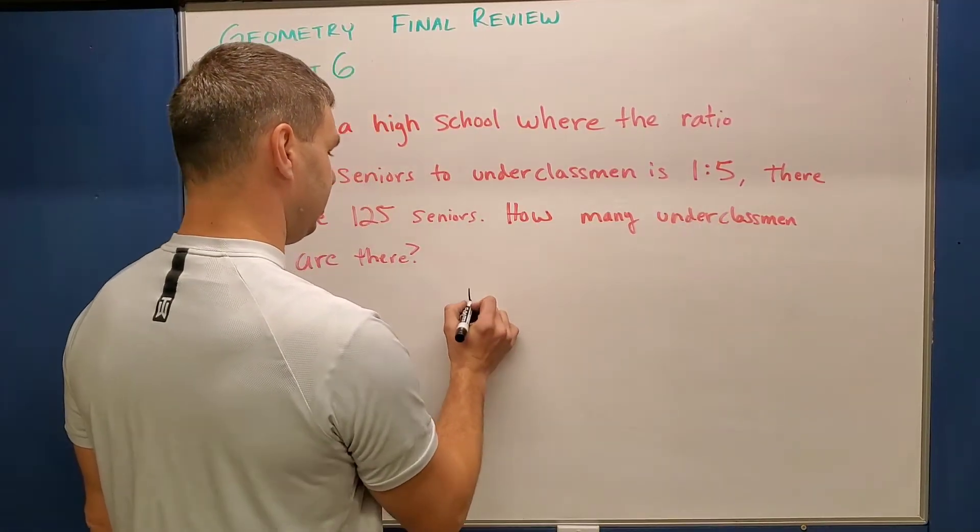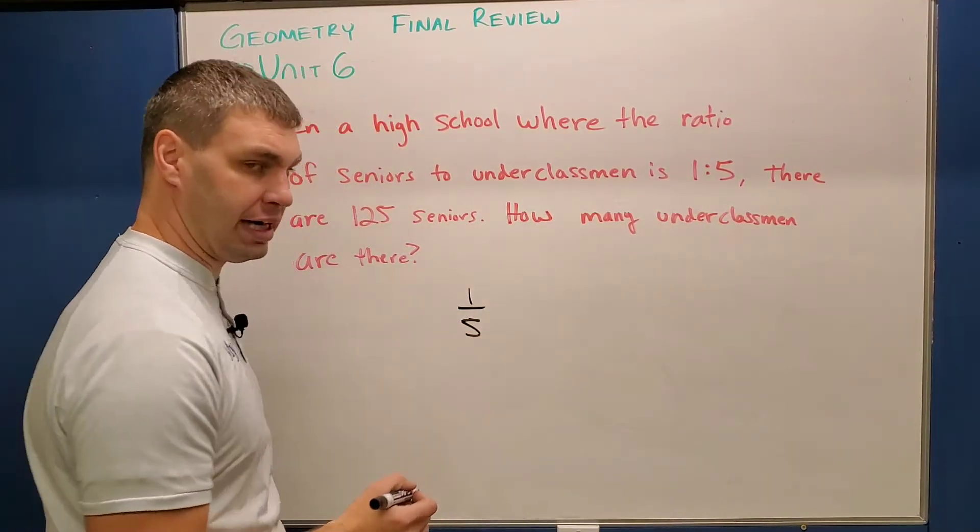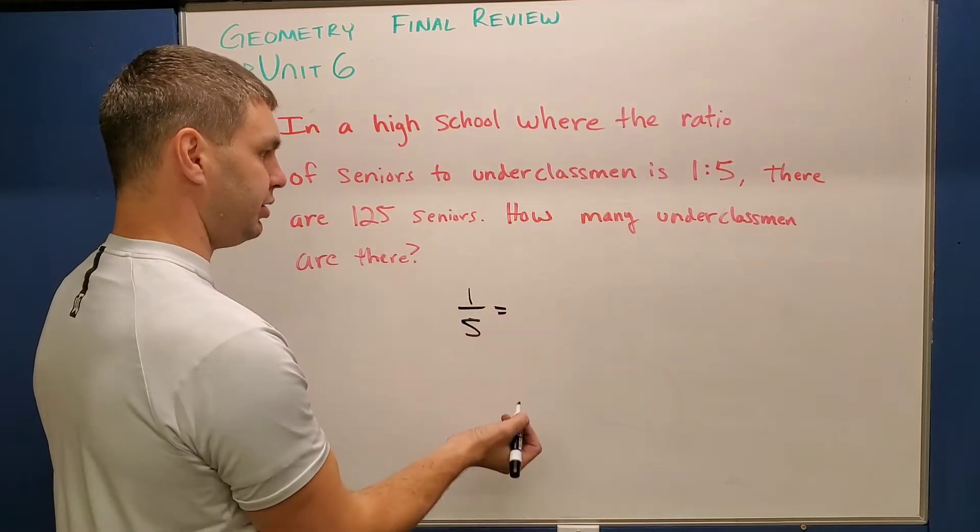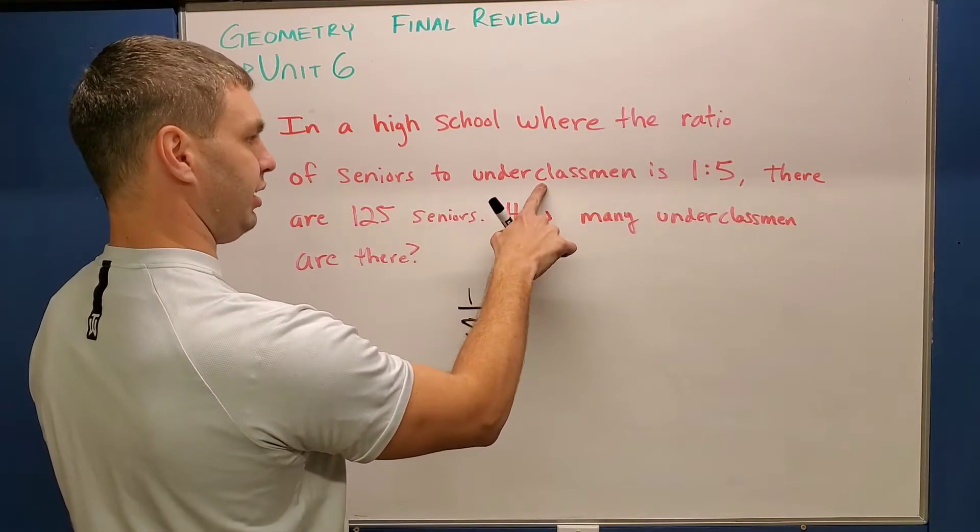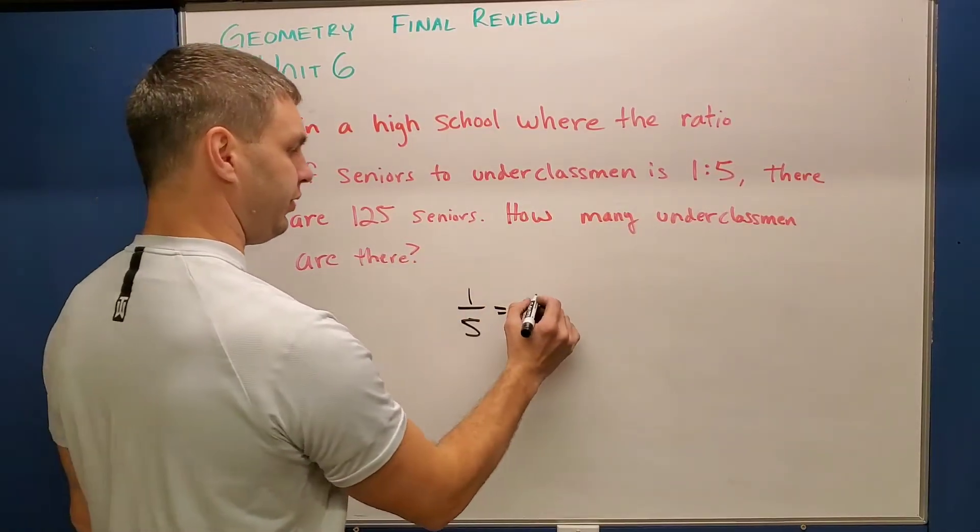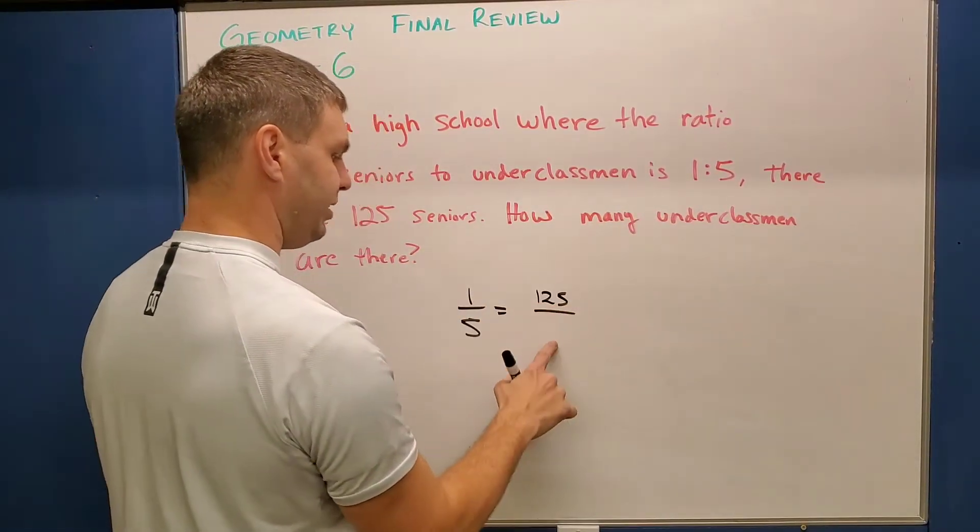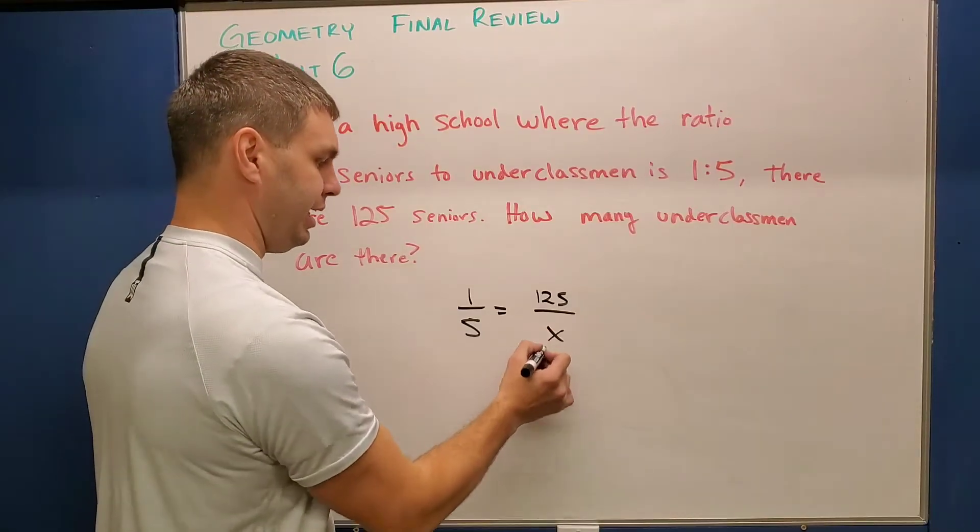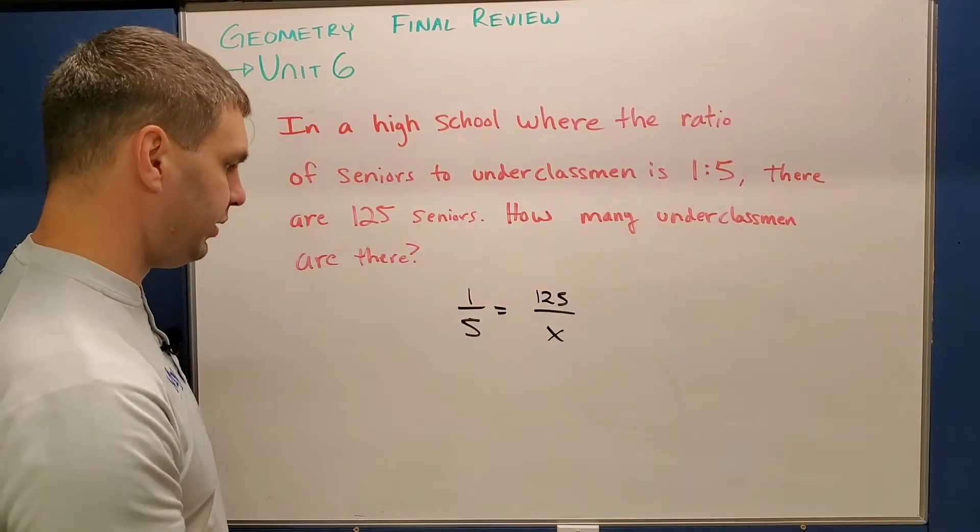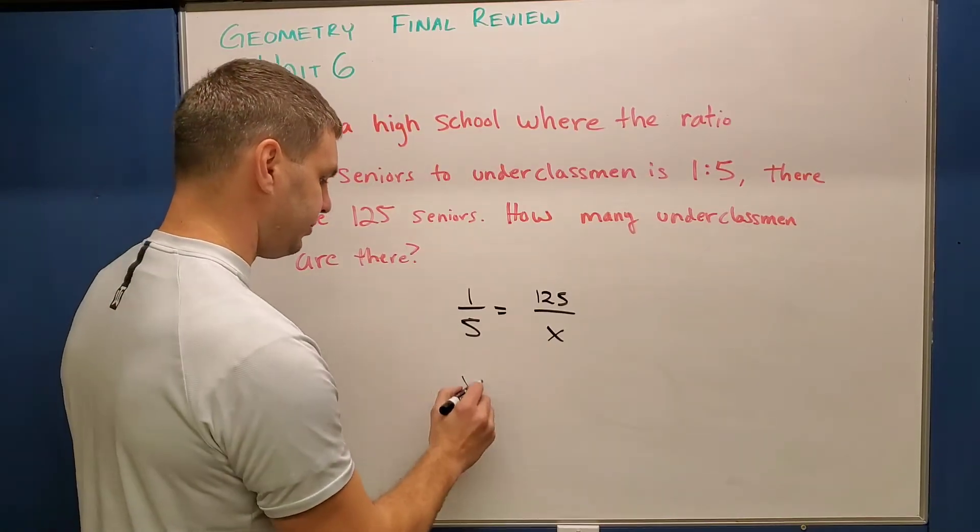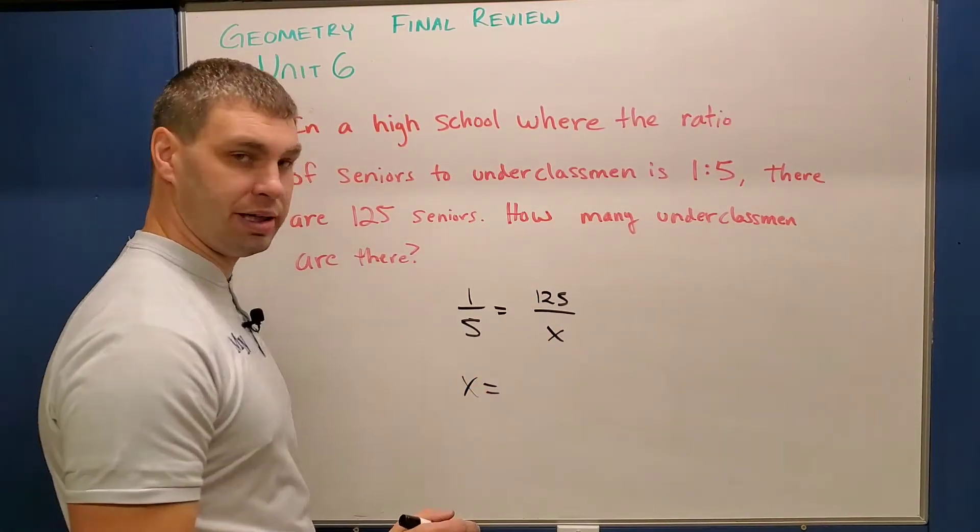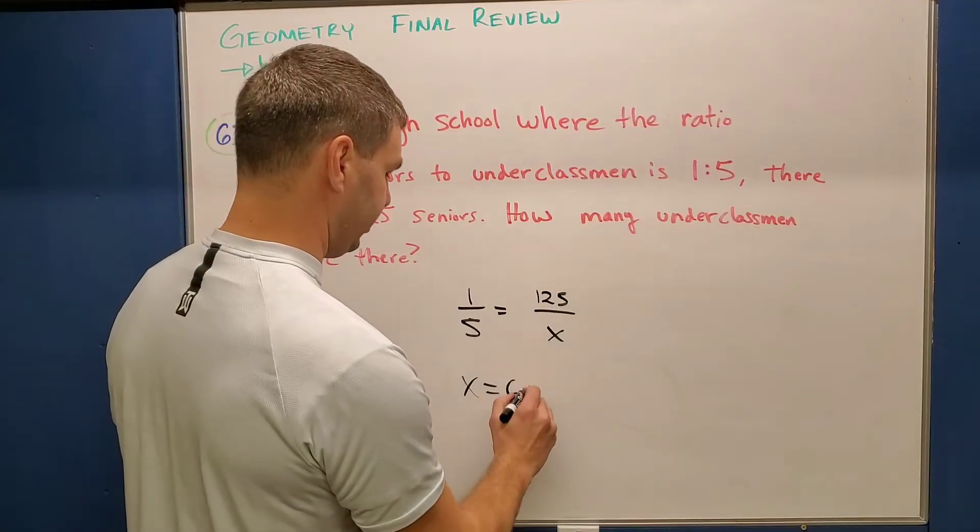So what I can do is set up a proportion to help me solve this. So I'm going to change this one to five to look more like a fraction, one over five. And I'm going to set that equal to, so let's see, one is the amount of seniors to underclassmen. So I need seniors on top, which I know is 125, and then what I'm trying to find is the number of underclassmen. So I'm going to call that my x. And in this one, if I cross multiply, I get one times x is just x, and five times 125 is 625.